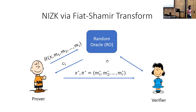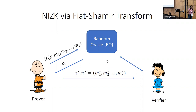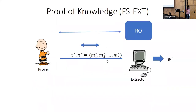One additional advantage the prover has in the non-interactive case compared to the interactive case is that the prover gets to query the random oracle for multiple challenges and then pick the one it likes to complete the proof. The standard security definition considered as proof of knowledge in the non-interactive world is Fiat-Shamir extractability.